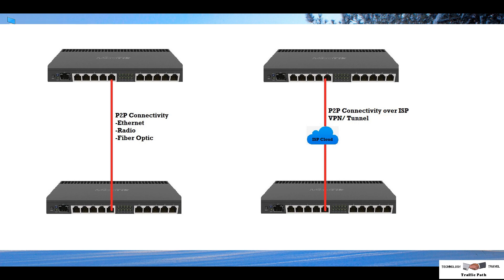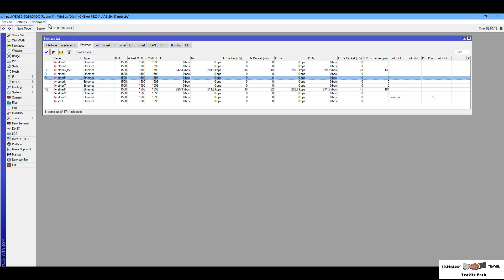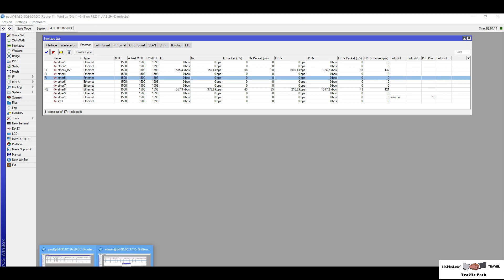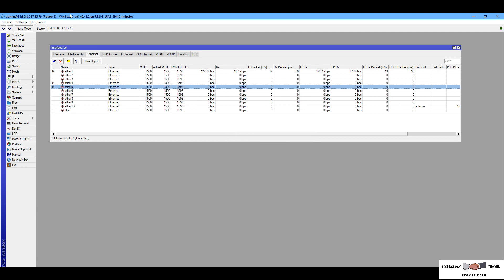Now I am going to show you how to use these tools. For this testing I am using two MikroTik routers, and between those two routers I am using an Ethernet connectivity link. This is my router one, and this is my router two, connected via the Ethernet 5 interface.